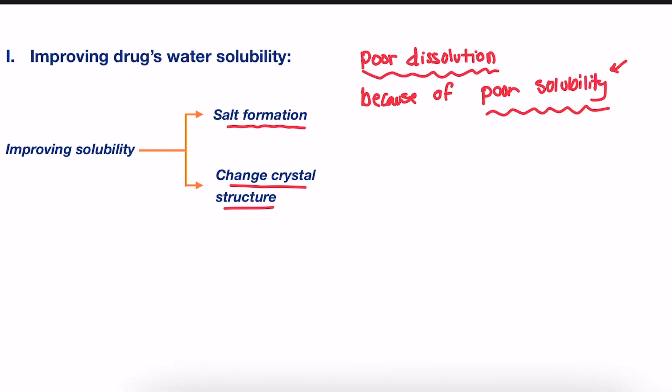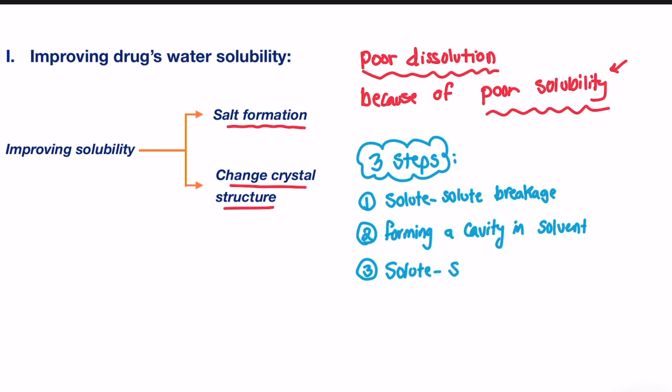Let's quickly remember the concept of solubility. There are three main steps that happen when drug dissolves. Starting with breaking the solute-solute interaction, so the drug particles interaction. Followed by forming a cavity inside the solvent, so like inside the water, where the solute will be in. Third is formation of solvent-solute interaction, so water-drug interaction, to make a solution.